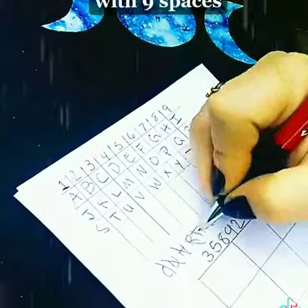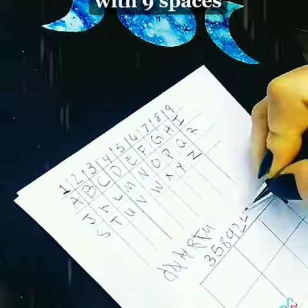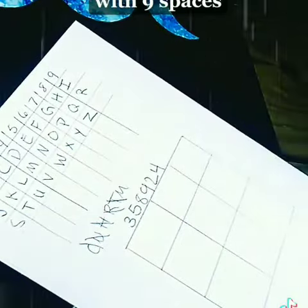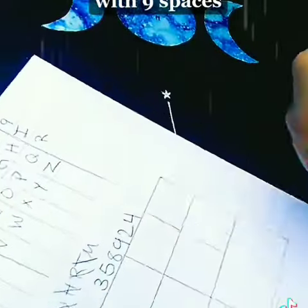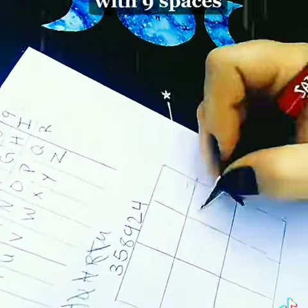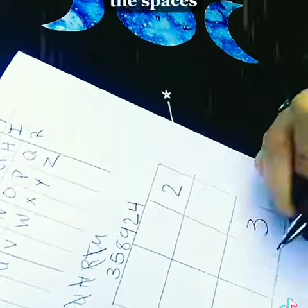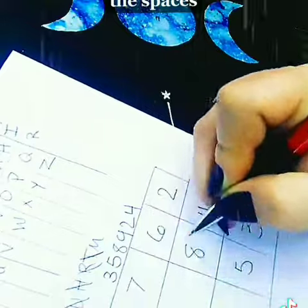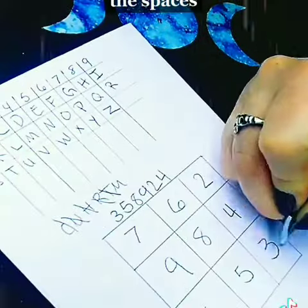When you have your numbers, draw a 3x3 box with 9 spaces. Randomly write the numbers 1 through 9 in the spaces.